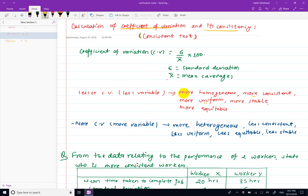and the consistency. The consistency will be tested. The coefficient of variation will be calculated first. The coefficient of variation is CV, which equals standard deviation divided by the mean or average.